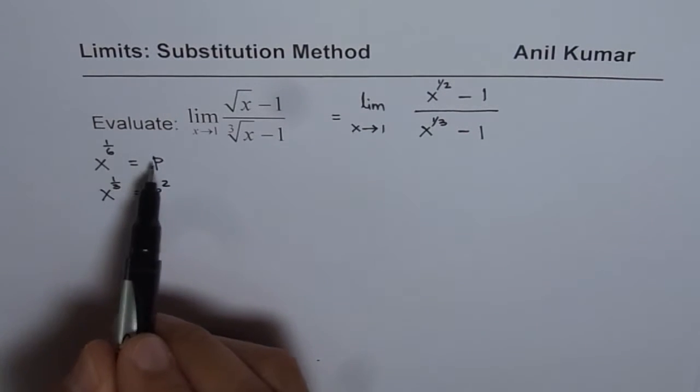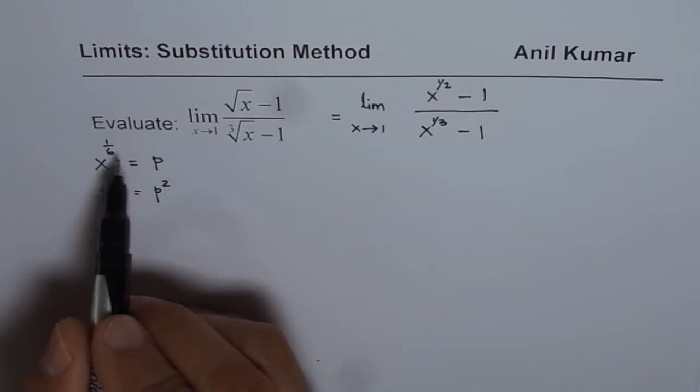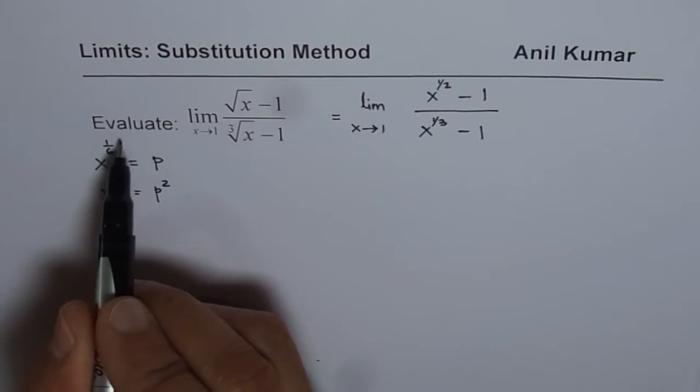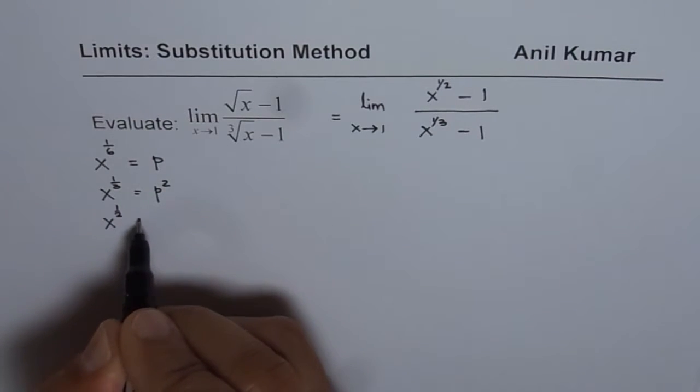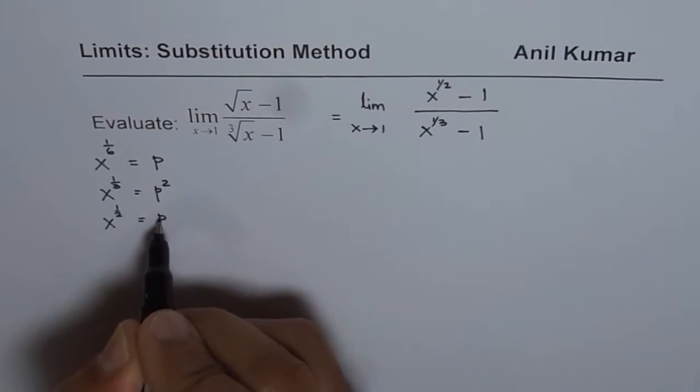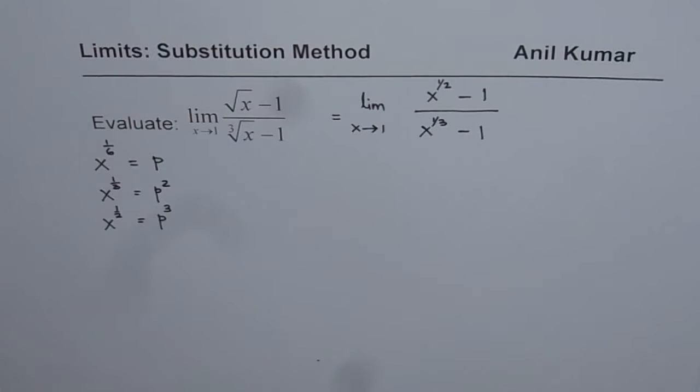And for getting the square root, we'll have to cube p. So when you multiply this by 3, then it becomes p cube. So x to the power of 1 over 2 is going to be p cube. You get the idea.